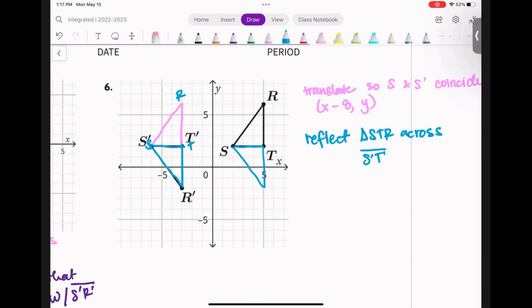No, it doesn't matter. The order in which you write triangle STR right now doesn't matter unless you're writing a statement about it. Right now we're just going to reflect that triangle, and that triangle has three names: triangle STR, actually more than that—STR, TRS, RST, and then the other way, RTS, TSR, SRT. So he has a lot of names, lots of nicknames. Good question.